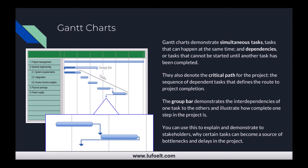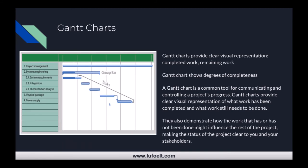You can use Gantt charts to explain to stakeholders why certain tasks become a source of bottlenecks or delays, because inevitably things happen — we talked about uncertainty before. This is an effective way to show other managers or stakeholders why you might be behind schedule, presented in a very objective and easy-to-understand way. Gantt charts provide a very clear visual representation of completed work and remaining work.